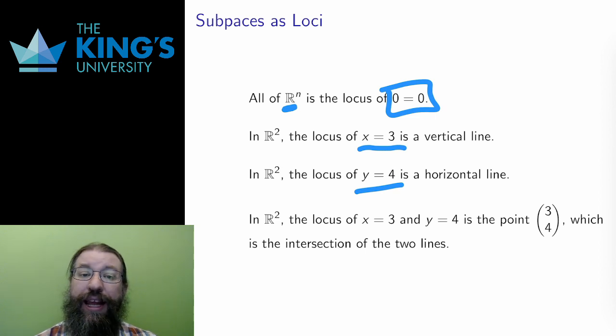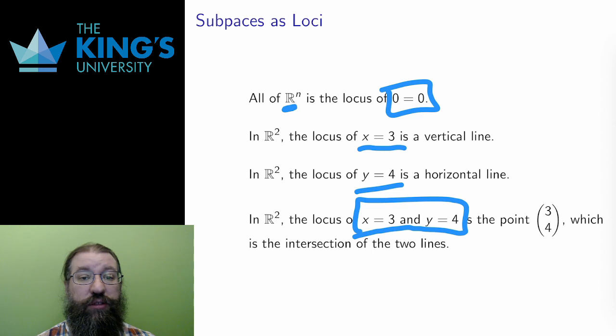Now that I can have the locus of more than one equation, I can take the locus of both x equals 3 and y equals 4. What points satisfy these equations? Only the point 3, 4. So, the locus of these two equations is just this individual point.